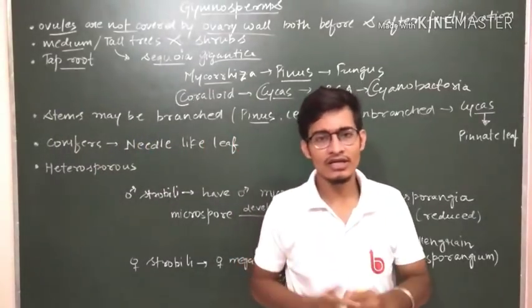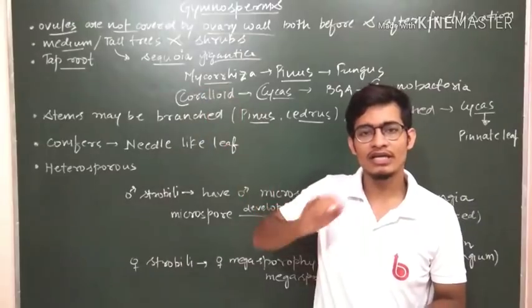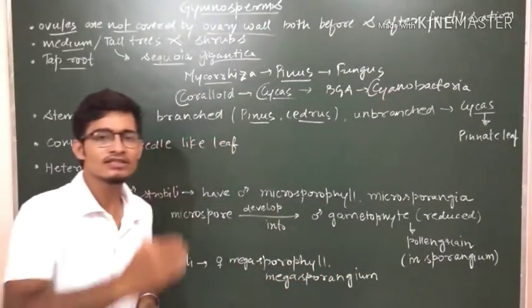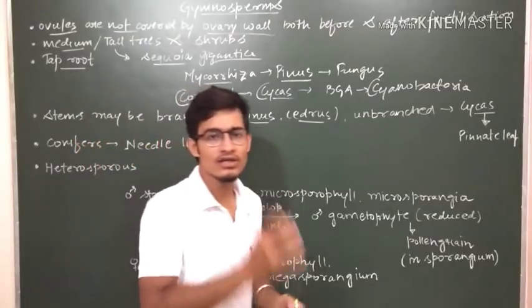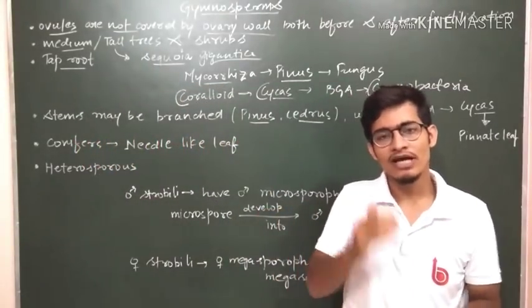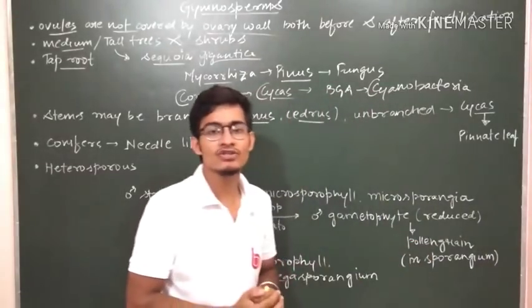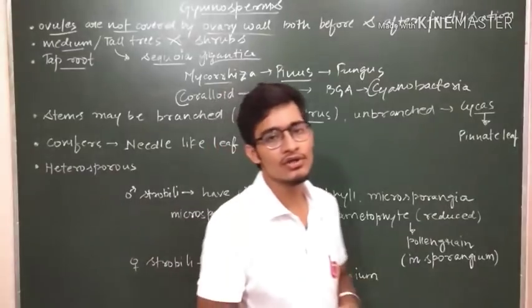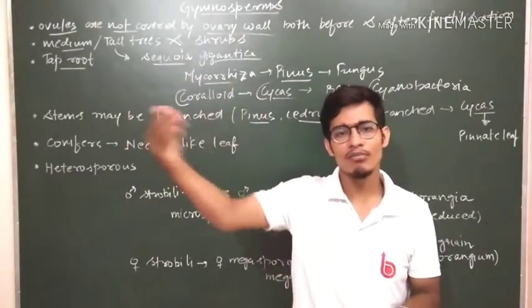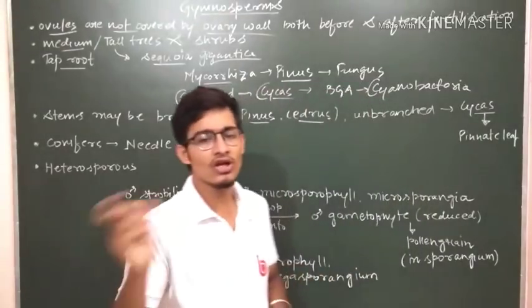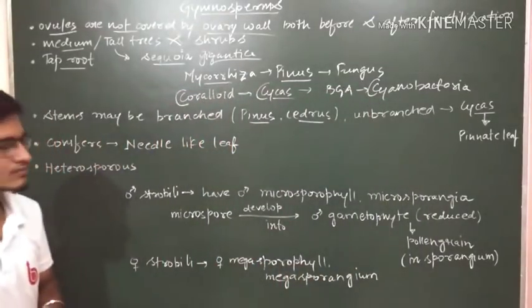So there are three C's in the name itself. The first C is for coraloid roots, the second C is for Cycus, the third one is cyanobacteria which are also known as blue-green algae. These are photosynthetic in nature and they can also fix nitrogen. The first thing is the seeds will be naked, then they will be containing shrubs medium to large sized trees.